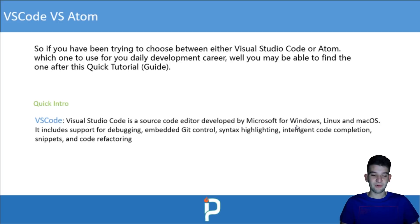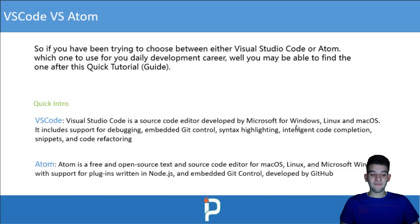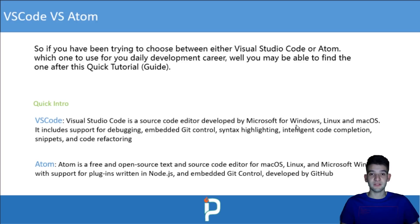Atom is a free and open source text and source code editor for macOS, Linux, and Windows. It supports plugins written in Node.js and has embedded Git control, developed by GitHub. So Atom is developed by GitHub, Visual Studio Code is developed by Microsoft, and both are free and open source.